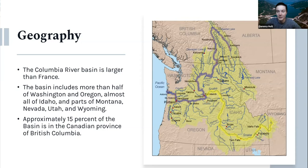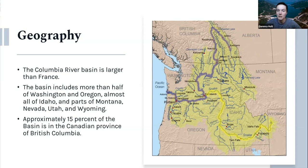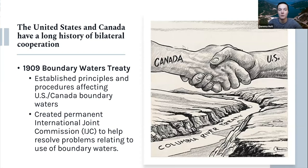The Columbia River Basin is over 250,000 square miles, which is larger than the entire area of France. The basin includes more than half of Washington and Oregon, almost all of Idaho, and parts of Montana, Nevada, Utah, and Wyoming. Approximately 15% of the basin is in the Canadian province of British Columbia, where the Columbia River originates. In southeastern Washington, the Columbia River meets the Snake River and together feeds into the Pacific Ocean. The United States and Canada have a long history of bilateral cooperation.